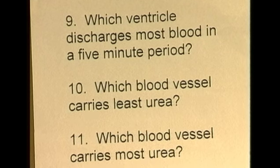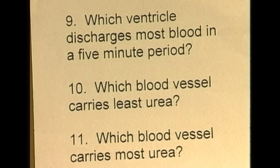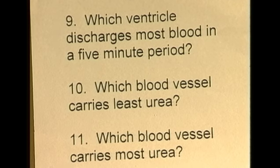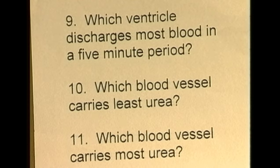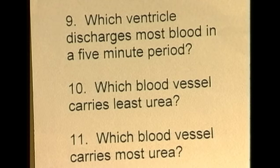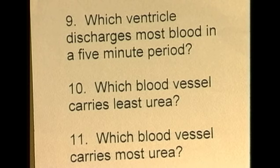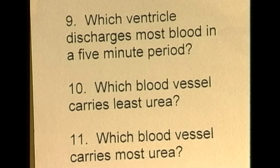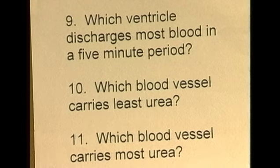Question eleven: which blood vessel carries most urea? Urea is produced in the liver as a way of getting rid of toxic nitrogen waste products from metabolism. So the blood vessel carrying most urea is the one that drains the organ which produces the urea. Because it's the liver that produces the urea, it is the hepatic vein which carries slightly more urea than the other blood vessels.